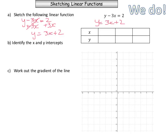Substituting the values of x — negative 1, 0, and 1: for x equals negative 1, we have 3 times negative 1 which is negative 3, plus 2 is negative 1. For x equals 0, we have 0 times 3 which is 0 plus 2 equals 2. Then substituting 1 we get 3 times 1 which is 3 plus 2 which is 5.